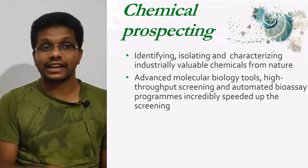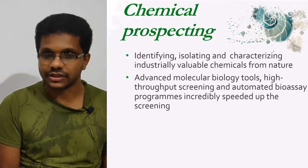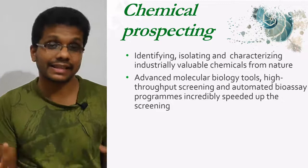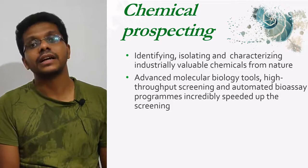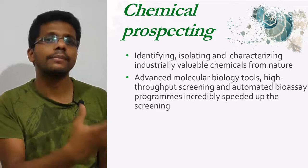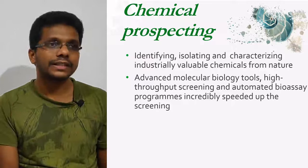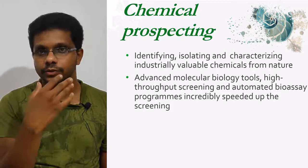In chemical prospecting, we are identifying, isolating and characterizing industrially valuable chemicals from nature. This chemical can be originated from any type of microorganism, and there are classical examples for this type of chemicals. The exploration for antibiotics has begun centuries ago, and we have found many antibiotics and are also able to modify existing antibiotics to get better activity. But the chemical prospecting process involves huge time and money investment.